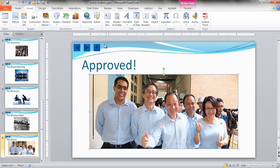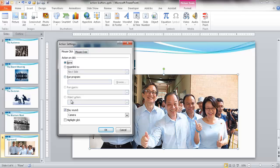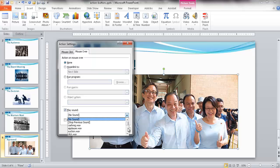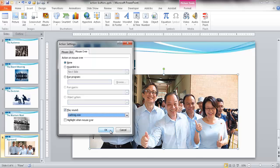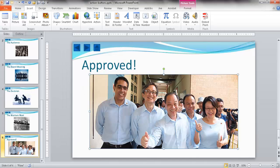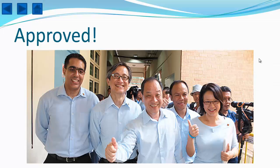You can also have an action trigger when you hover over it rather than clicking. There's a Mouse Over tab in the action settings. I'll click on that tab and give it a different sound — maybe a cash register sound, since they're approving something that will make the company money. Going into slideshow view and hovering over the image without clicking, you can see that hovering over it initiates the sound. You can either click or hover over an object to trigger the action.